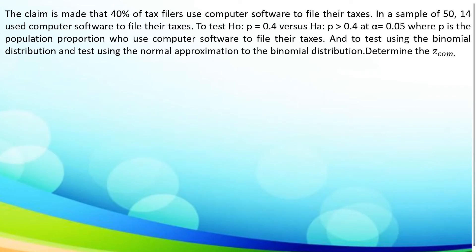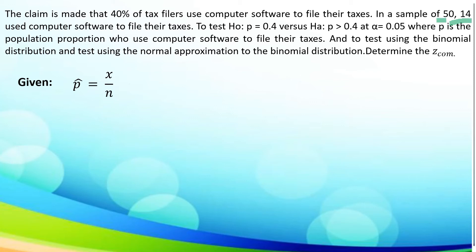Let's take another one. The claim is made that 40% of tax filers use computer software to file their taxes. In a sample of 50, 14 used computer software to file their taxes. To test the null hypothesis that P is equal to 0.4 versus the alternative hypothesis that P is greater than 0.4, at the given alpha of 0.05, where P is the population proportion who use computer software to file their taxes. Let us first determine the given. Our P-hat: X is 14, N is 50, so 14 divided by 50 is equal to 0.28. And our given P, which is 40%, converted to decimal, is 0.40.